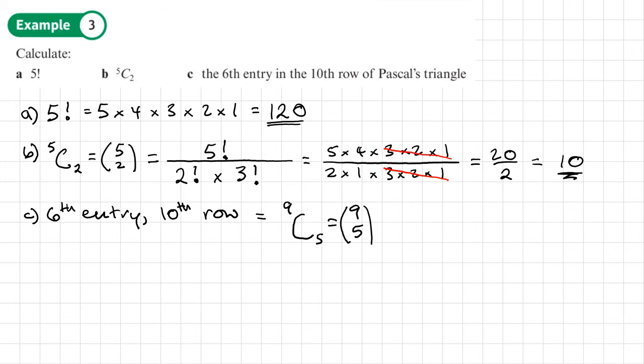Now, we probably want to use our calculator for this because 9 factorial over 5 factorial times 4 factorial, it is going to be pretty long. So we'll just use our calculator. So this is what we type in our calculator. 9, shift, divide, 5, equals, and you'll see 9c5 come up from your calculator. And that gives us a value of 126.